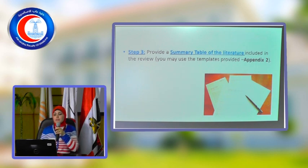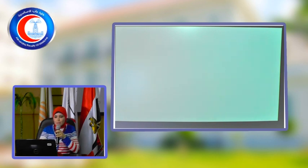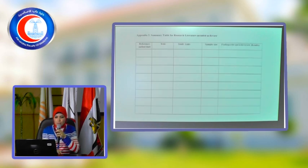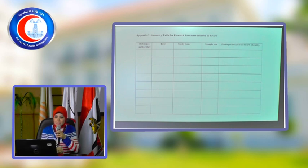The third step is to provide a summary table of the literature included in the review. The articles which you accessed — you want the details. You can write the reference: what is the reference you used? Author and date. You have written references using the reference style. You can write the list of references used in the journal — at least 10 references.